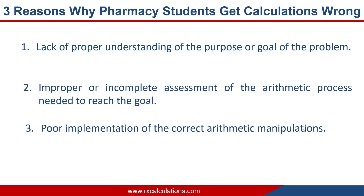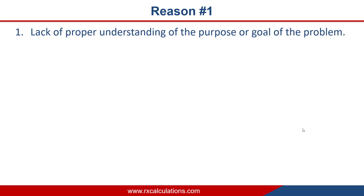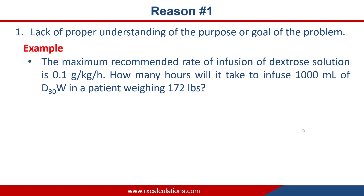So now let's take each of these reasons and use an example to see how exactly students get questions wrong. Reason number one: a lack of proper understanding of the purpose or goal of the problem. The question says: the maximum recommended rate of infusion of dextrose solution is 0.1 grams per kilogram per hour. How many hours will it take to infuse 1000 milliliters of D30W in a patient weighing 172 pounds?